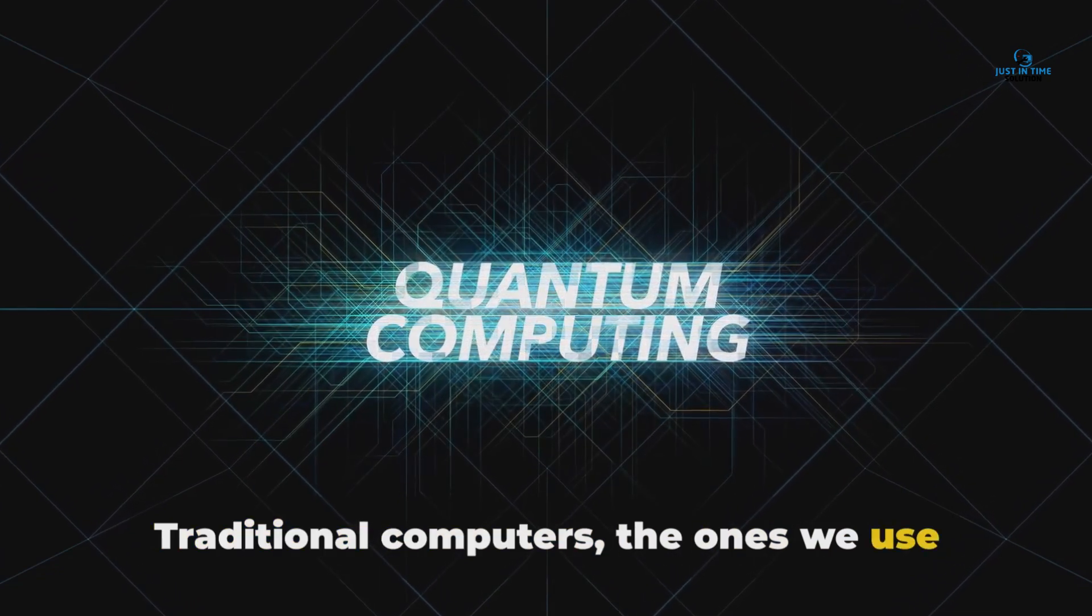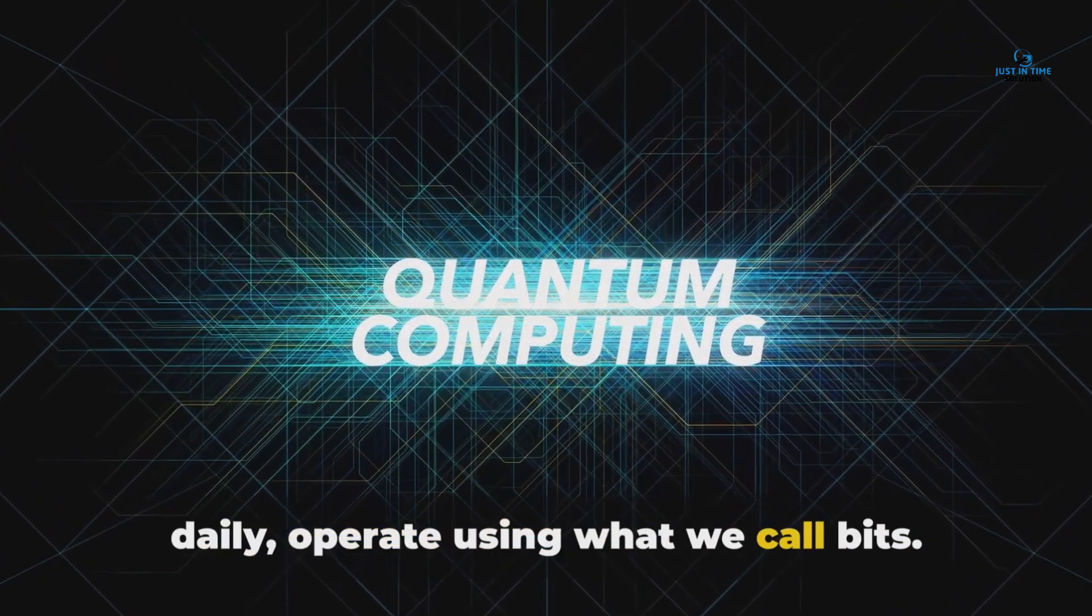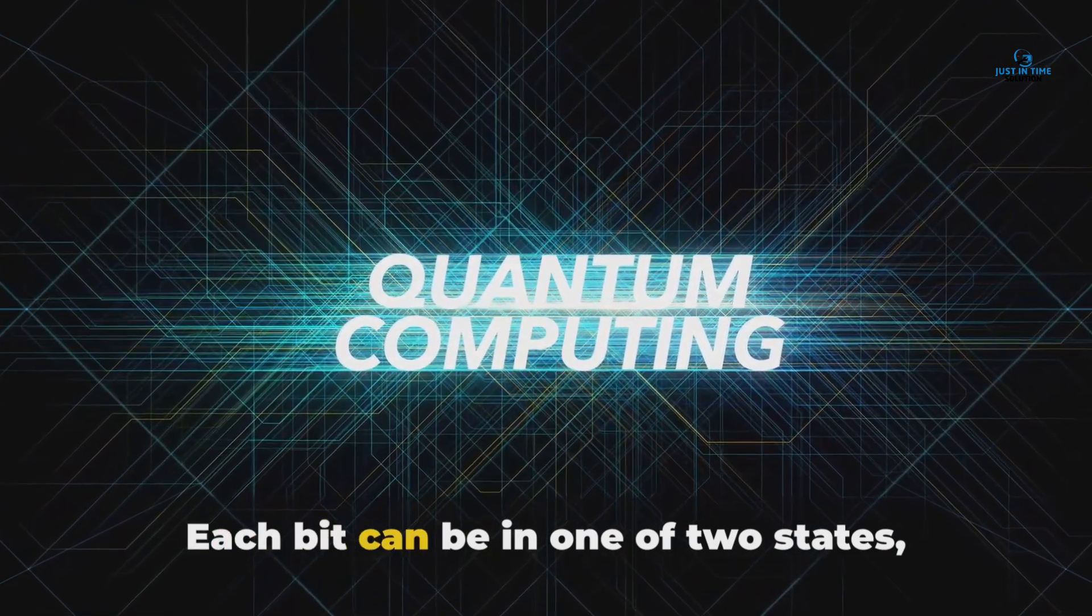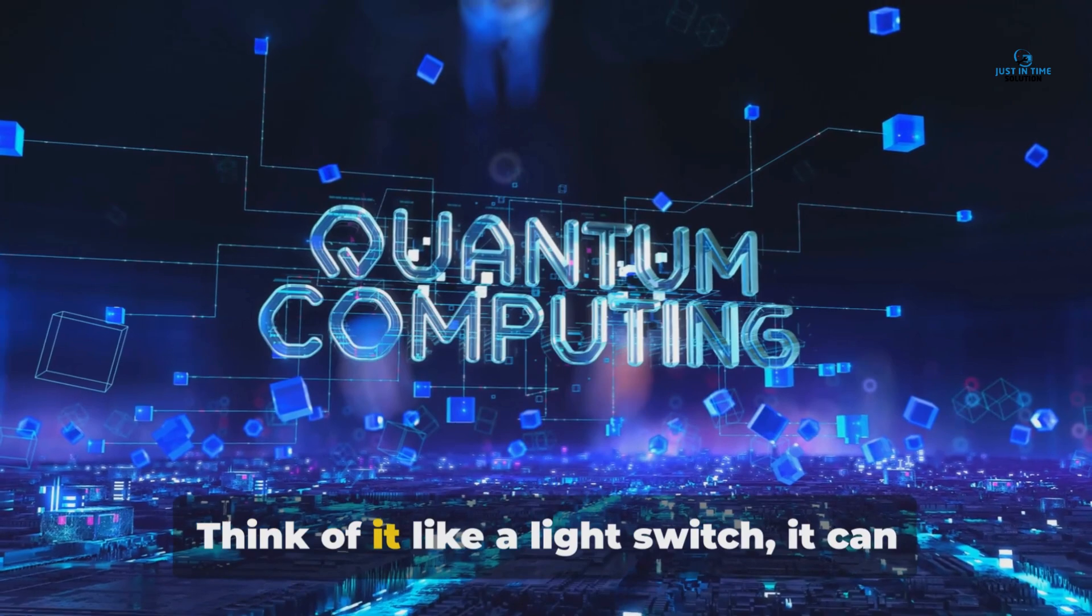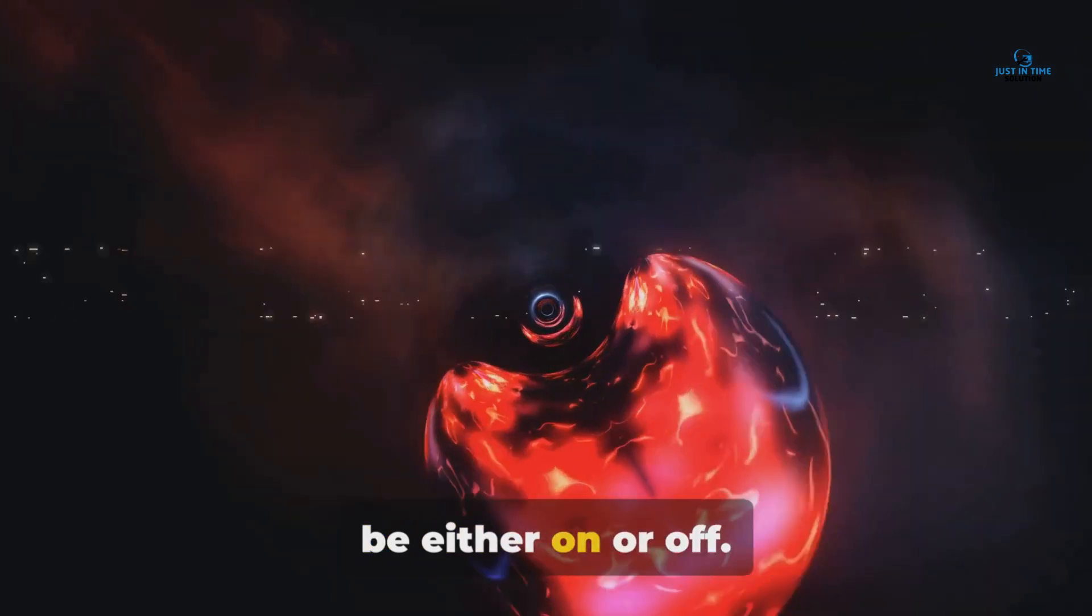Traditional computers, the ones we use daily, operate using what we call bits. Each bit can be in one of two states, either a zero or a one. Think of it like a light switch. It can be either on or off.